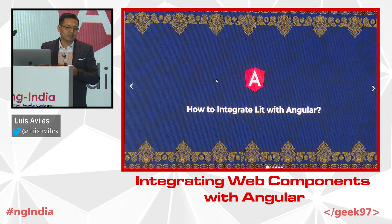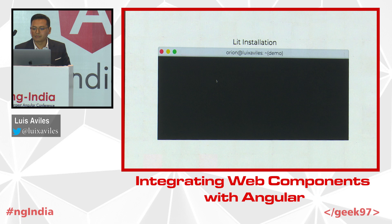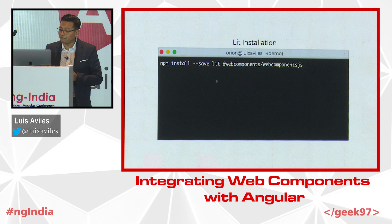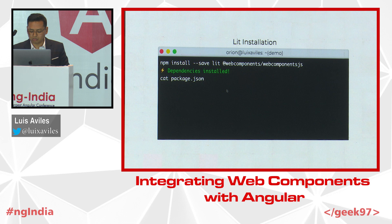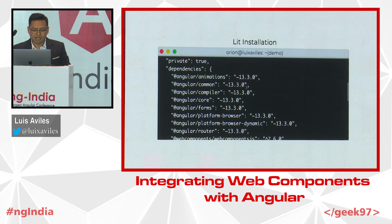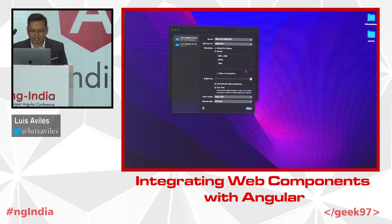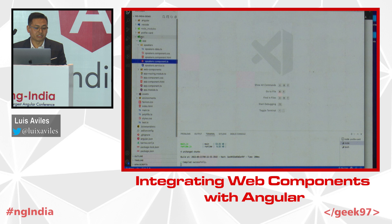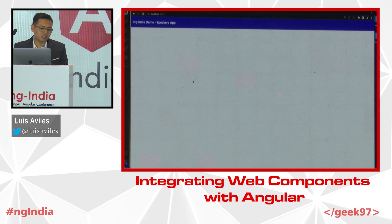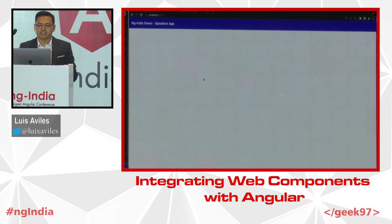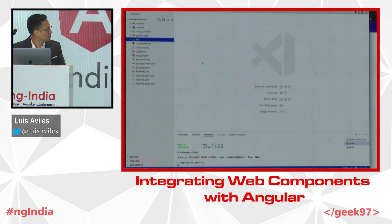So how can we integrate LIT using Angular? The first thing we need to do is install LIT in our terminal in our existing Angular project. We'll also need the web components polyfills to make it work. Once that's done, we can make sure they are installed — I have the LIT library and the web components polyfills. The current version of LIT is 2.2. Now I'm going to show you a demo where I created an Angular project — a basic setup using a bit of Angular Material — and we are going to render the speakers list of this conference.